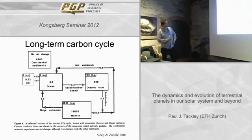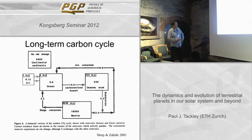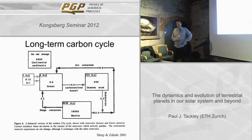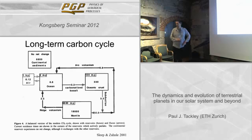Talking more about the long-term carbon cycle: the cycling between the air, ocean, and mantle — looking at the numbers for how much carbon is in these different environments — the mantle has 18,000 units, the ocean 6.6, and the air just 0.12. So most of the carbon in the Earth system is actually in the mantle. The second biggest reservoir is the oceanic crust, and then the ocean and air have relatively little of it.